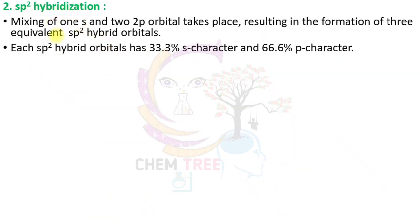Second: SP² hybridization. In SP² hybridization, one s orbital and two p orbitals are intermixed to form three SP² hybrid orbitals. The s character percentage is 33.3% and the p character is 66.6%.